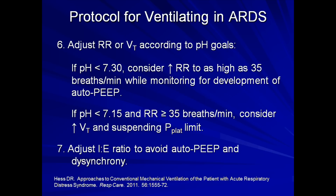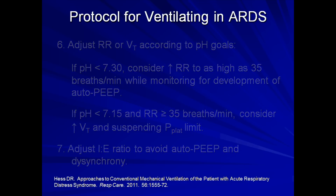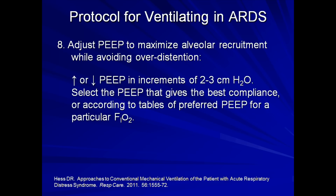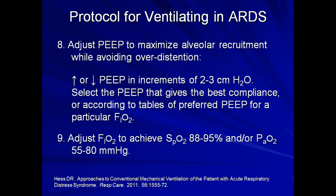Both auto-PEEP and dyssynchrony will be discussed in a future lecture. Step 8: adjust the PEEP to maximize alveolar recruitment while avoiding overdistension by increasing or decreasing PEEP in increments of 2–3 cm of water to a goal that gives either the best overall respiratory system compliance or according to tables of preferred PEEP for a particular FiO2, such as that shown earlier in this lecture. Step 9: adjust the FiO2 to achieve an O2 saturation of 88–95% or an arterial oxygen tension of 55–80 mmHg, with some room to adjust those goals depending upon the clinical situation.